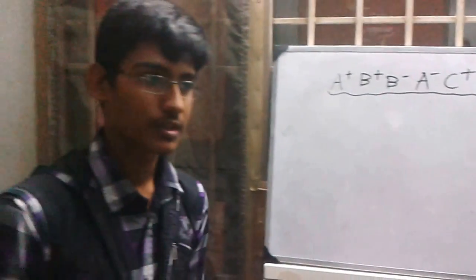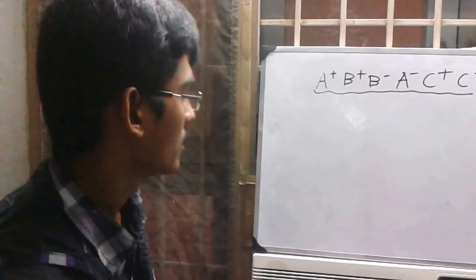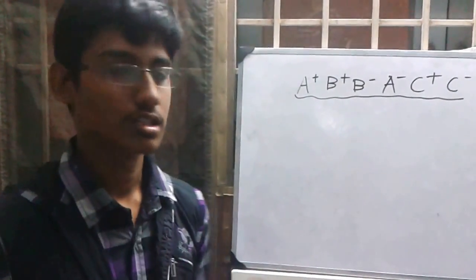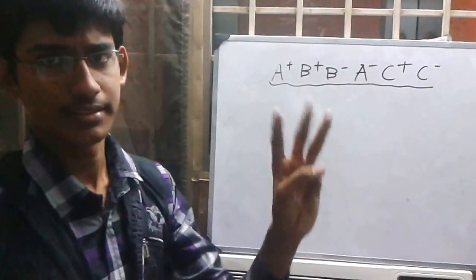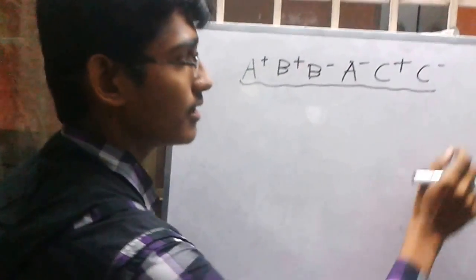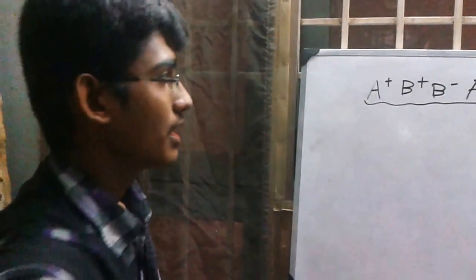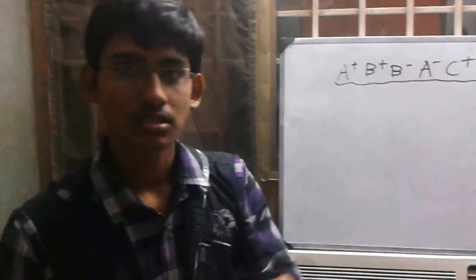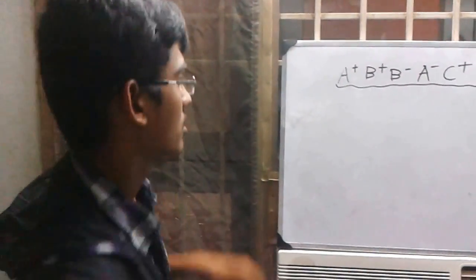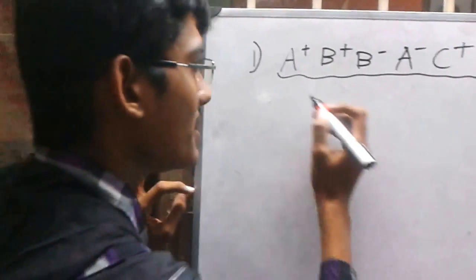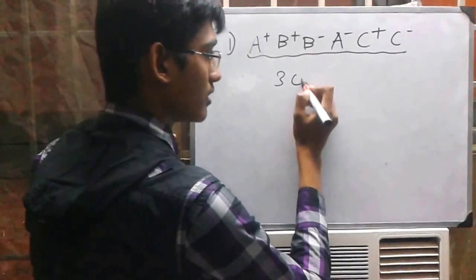The first step is to identify the number of cylinders. Based on the number of alphabets, we can find out the number of cylinders. Here there are three cylinders, namely A cylinder, B cylinder, and C cylinder. The positive and negative signs indicate: the positive sign stands for the extension of the valve, and the negative sign indicates the contraction. So we have identified the number of cylinders to be three.